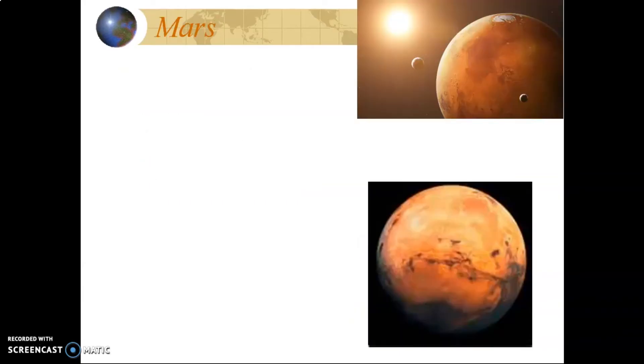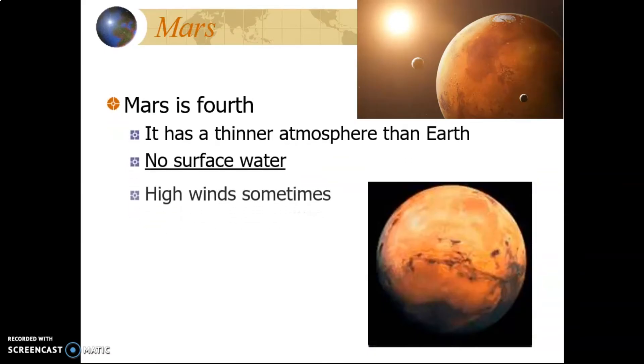Mars receives a lot of attention for the possibility of having life, but it is not perfect. Mars has no surface water, which would not be helpful for many living things, but there is water in the form of ice. There are two moons and vicious storms and high winds that devastate the surface. There is no clear proof of life on Mars, but there is methane gas, which leads some scientists to believe that there were ancient bacteria living on the red planet.